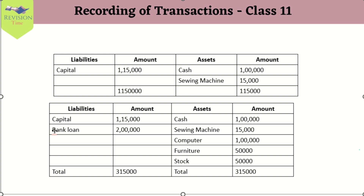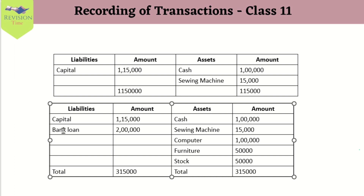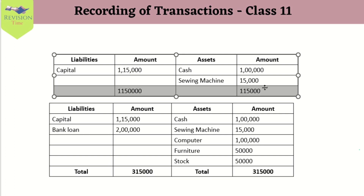This is what the equation demonstrates — assets are always equal to liabilities plus capital. We had a liability of bank loan, and adding our capital we get the total of assets we own in the business. The accounting equation is a mathematical equation stating that assets equal liabilities plus capital. It is also known as the balance sheet equation.